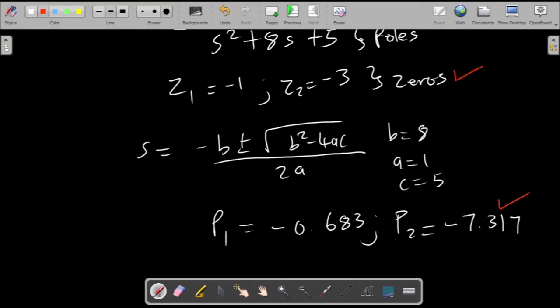So these would be your two zeros and these would be your two poles. That is exactly how you solve this question.